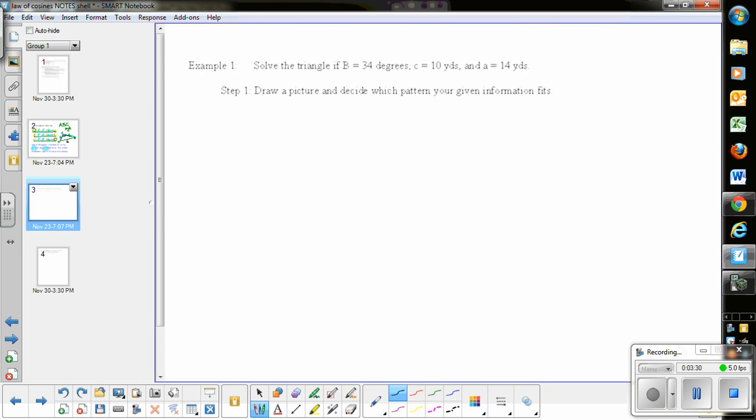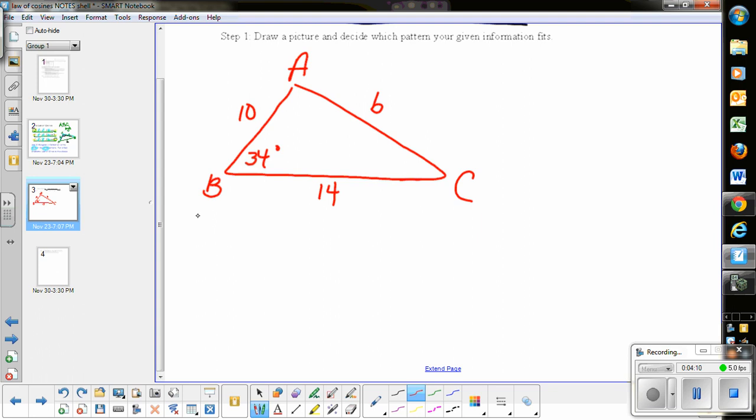Here are two examples. The first one says solve the triangle with this information. First we draw a sketch. This is 34 degrees at capital B. We have a 14 and a 10. This side at the bottom looks longer, so that's the 14 at capital A, and this is the 10 at C. We have a side, another side, and then the angle in between—that's side-angle-side pattern, which requires Law of Cosines.